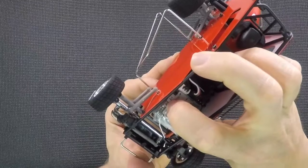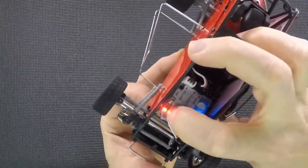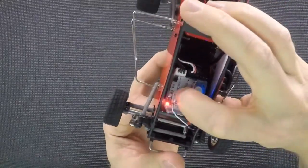So to get it into setup mode, we're going to hold the set button down and turn the car on at the same time. And you'll see this LED start to blink. That means it's in setup mode.